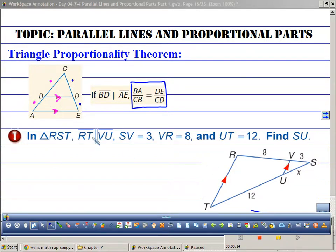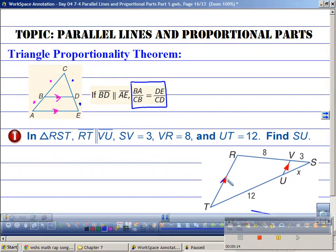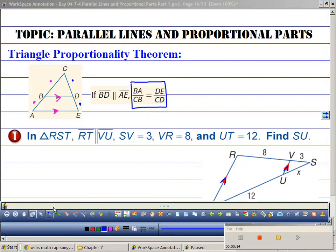Okay, so let's do this first one. In triangle RST, RT, which they already show us, is parallel to VU. It also tells us each one of these sides: 3, 8, X, 12. So all I have to do is set up the proportion.